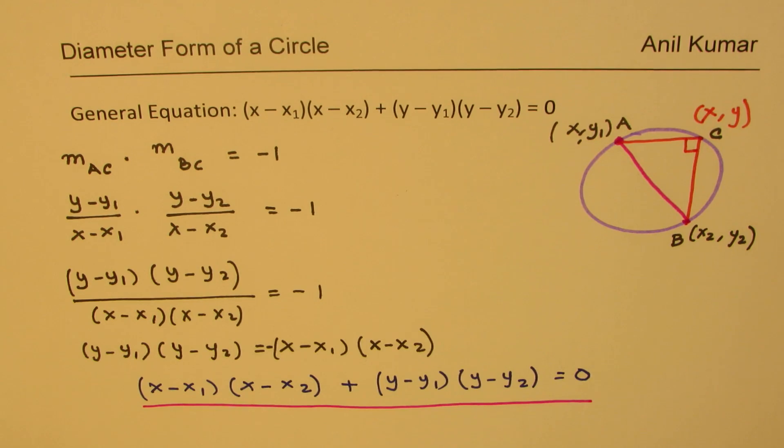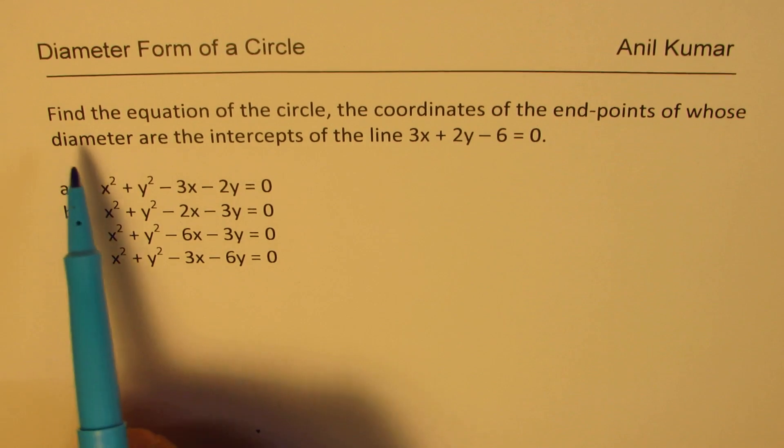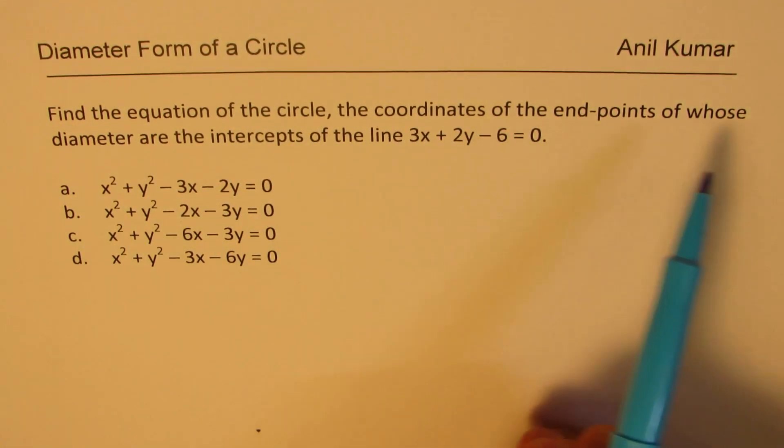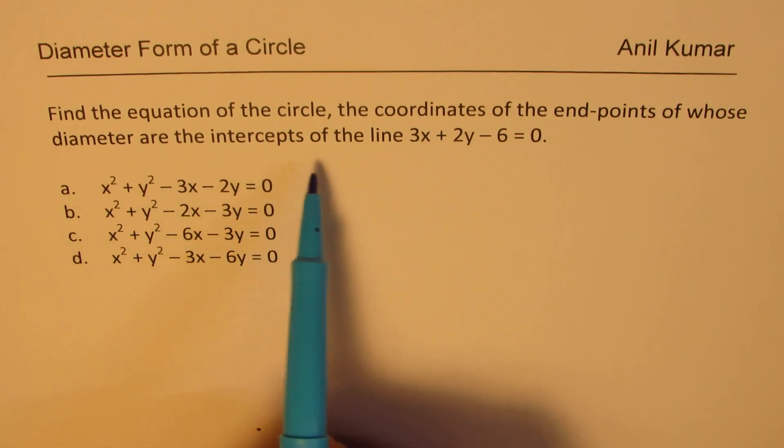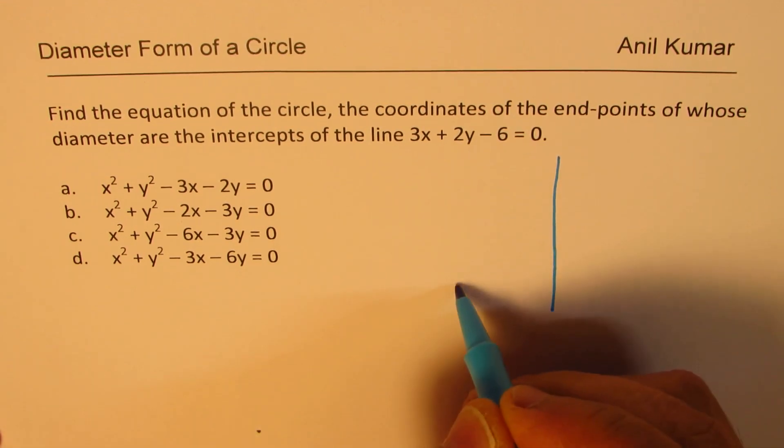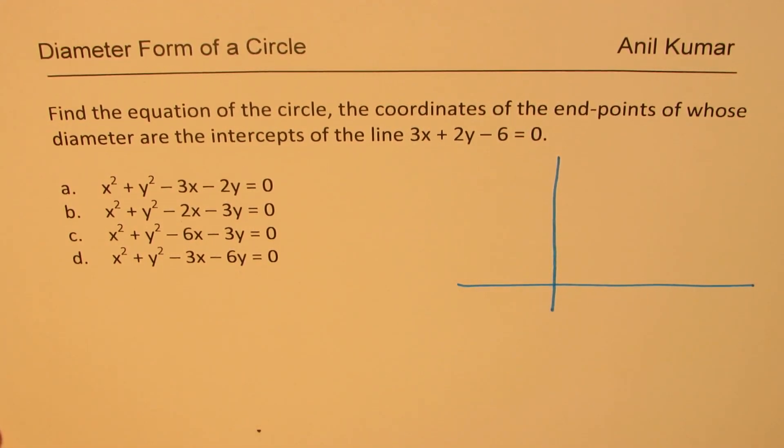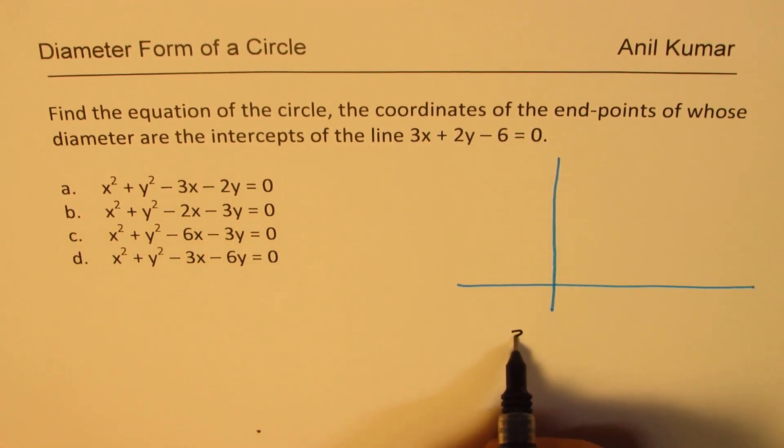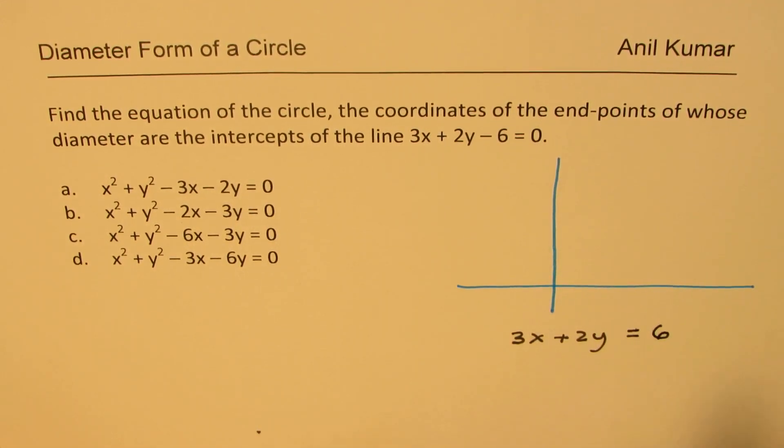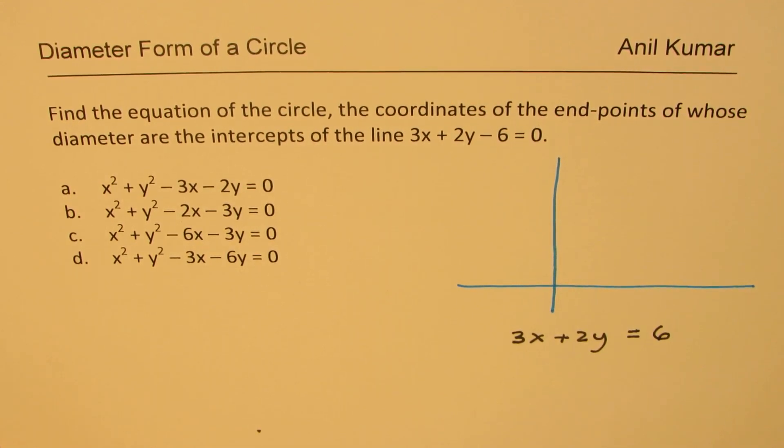Now if you can remember this then the solution to our question is very simple. So now let's look into the solution of our question. Getting back to the problem now, it says find the equation of the circle, the coordinates of the endpoints of whose diameter are the intercepts of this particular line. So basically now we need to actually find the intercepts of our line and then we'll use our formula. So the line given to us is 3x plus 2y, taking 6 to the right side I could write this as 6.